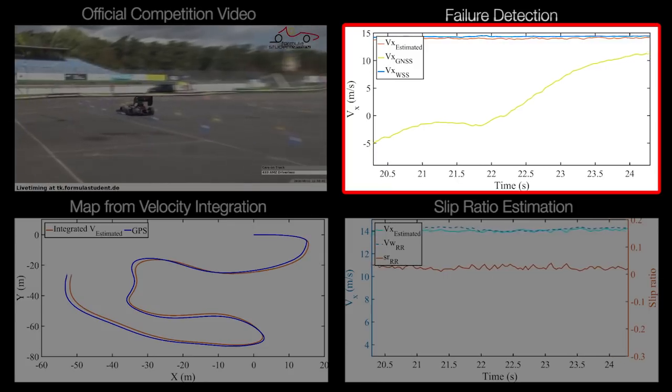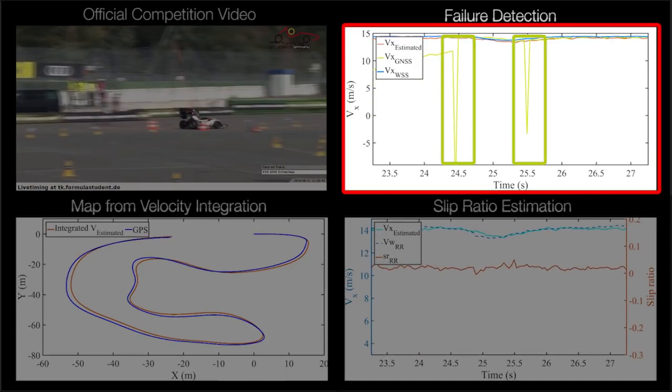Steep spikes are outliers of the GPS velocity and are rejected by both outlier and drift detection.